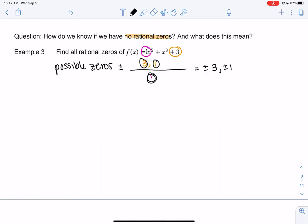So the only options are 3, negative 3, 1, or negative 1. So I'm just going to plug them all in, and if none of these are 0, then we don't have an option right now. And we'll come back to them.